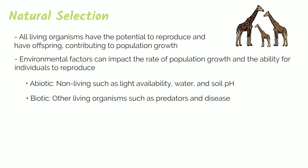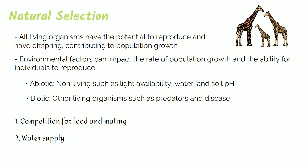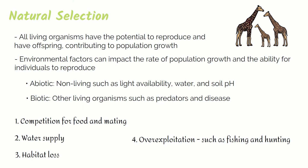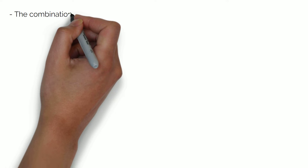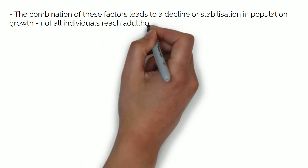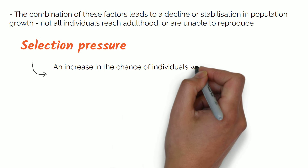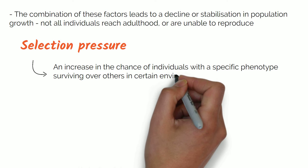Main examples of environmental factors are competition for food and mating, amount of water supply, habitat loss, overexploitation such as fishing and hunting, and temperature caused by climate change. The combined effect of these factors leads to a decline or stabilisation in population growth, as not all individuals reach adulthood or are able to reproduce. These environmental factors apply what is known as selection pressure — an increase in the chance of individuals with a specific phenotype surviving over others in certain environmental conditions.